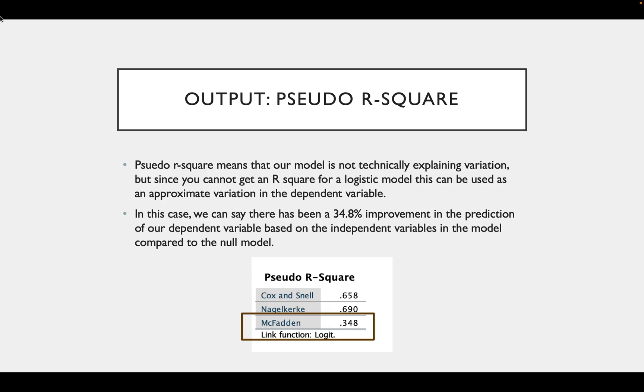So for ordinal models, we use the McFadden number. So in this case, we can say there has been a 34.8% improvement in the prediction of our dependent variable based on our independent variables in our model.